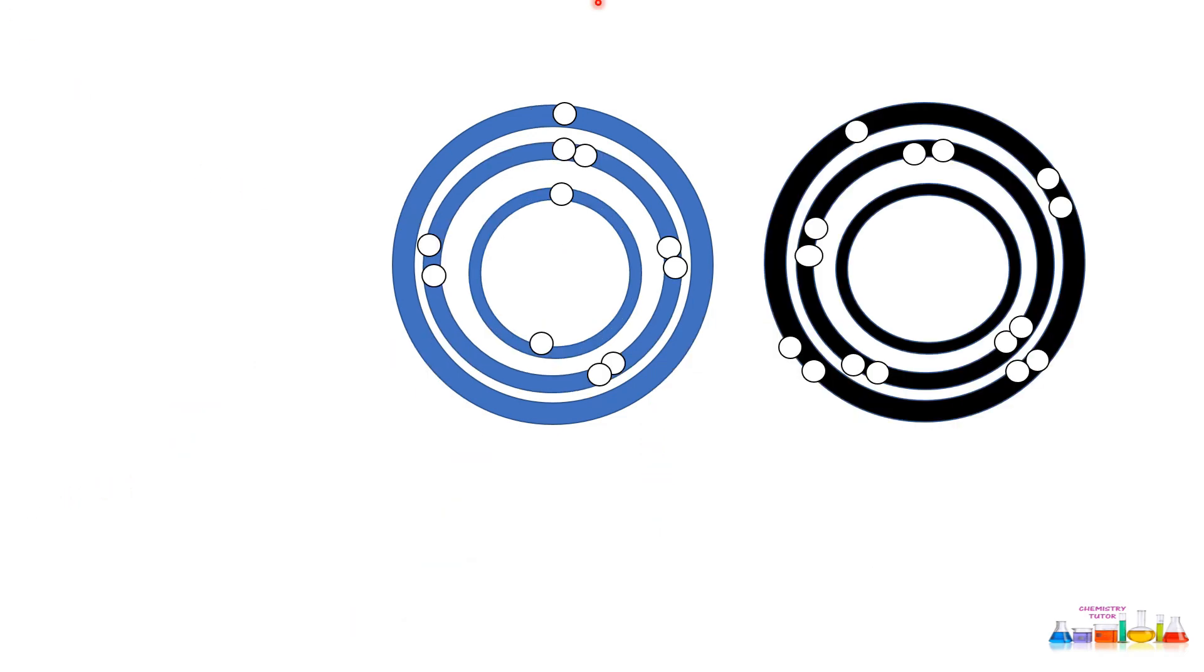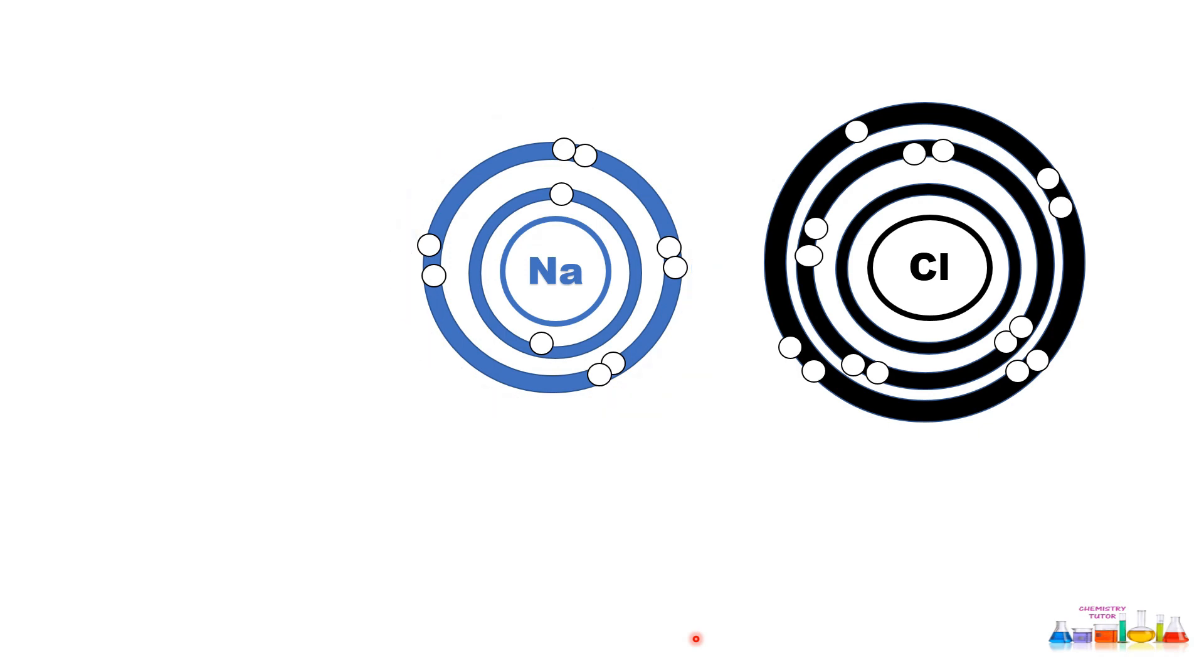Some elements of the periodic table attain stability by transfer of electrons. Sodium has one electron in the outer shell. Chlorine has seven electrons in the outer shell. Sodium can donate its one electron to chlorine, and in this way, chlorine's octet will be completed.